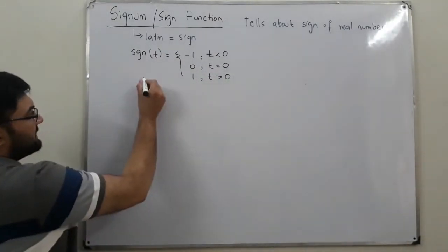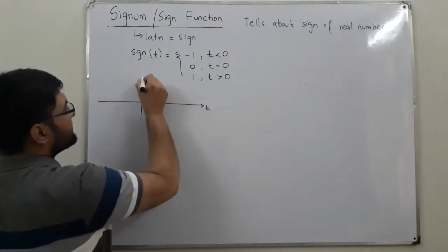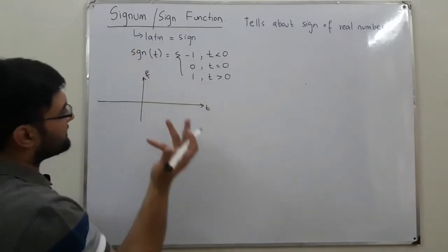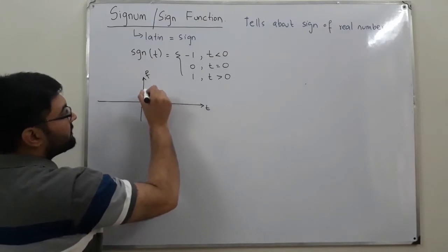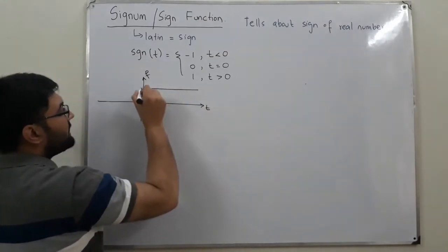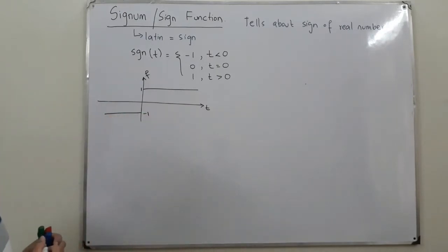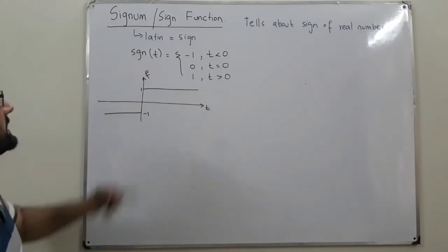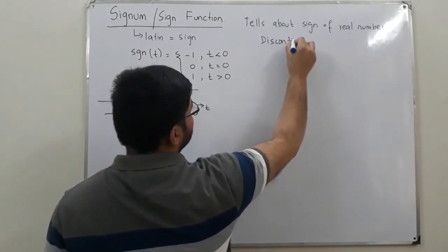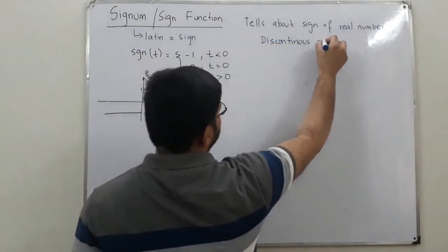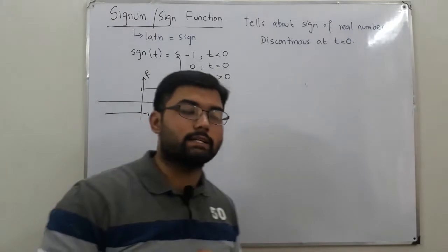You can draw the graph as well. If this is the time axis and this is the function axis — sgn — at t equal to 0 it's 0, after that when t is greater than 0 it's 1, and when t is less than 0 it's negative 1. As you can see, this function is discontinuous at t equal to 0, so it cannot be differentiated at t equal to 0.